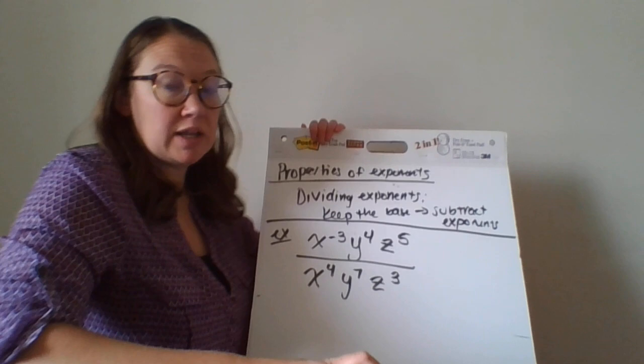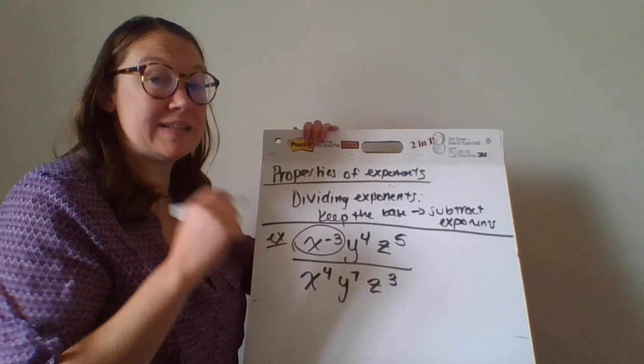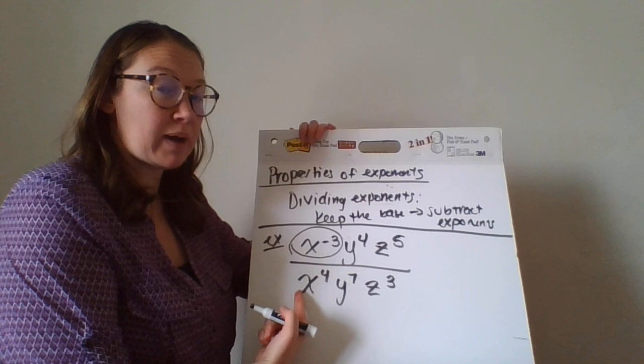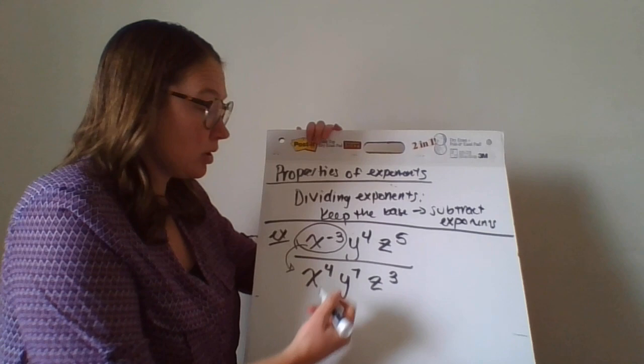So first thing we need to do is get rid of all those negatives. So this x to the negative three. Remember, if it's negative from that negative exponent video, if it's negative, it's going to move to the other spot of the fraction. So this x to the negative three is actually going to come down here.